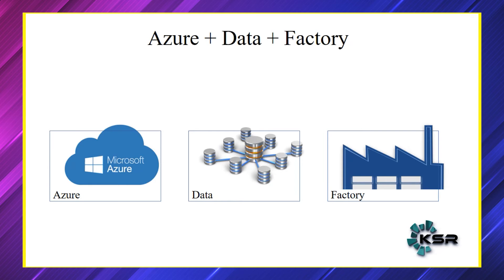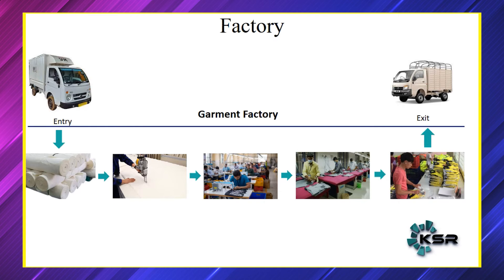We'll try to understand what a factory is. When you focus on the factory, we all know what a factory is. Let's take a Garment Factory as an example. Most of our parents or grandparents, if you've seen them, would have been working in factories on the village side or in rural areas. They go to work and we call it a factory. Imagine that we have a Garment Factory — you're getting raw materials, some raw cloth, arriving via vehicle and placed in your factory.